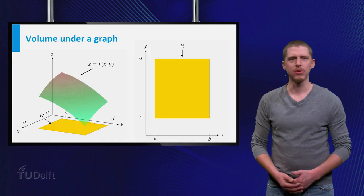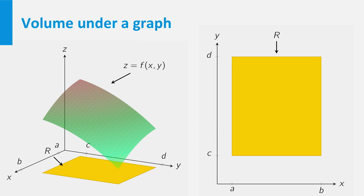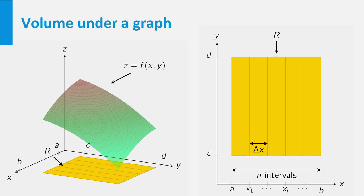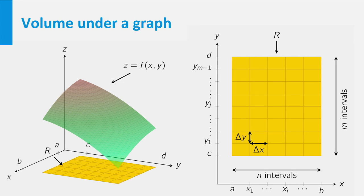Could we perhaps do something similar in respect to the volume of a region in free space, which lies under the graph of a function and above a rectangle? Let's start with dividing the rectangle R into n smaller strips with width delta x. If we now divide each of these strips into m rectangles with width delta y, we obtain n times m smaller rectangles.